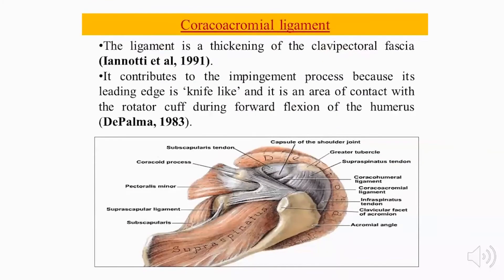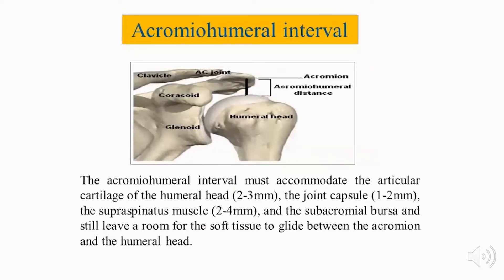The coracoacromial ligament is a condensation of the clavipectoral fascia and acts as a knife-like mechanism, impinging on the rotator cuff during forward flexion of the humeral head. The acromiohumeral interval is the distance between the undersurface of the acromion and the humeral head. This area is occupied by 2 mm of articular cartilage, the joint capsule (about 2 mm), the supraspinatus tendon (about 4 mm), and the subacromial bursa.